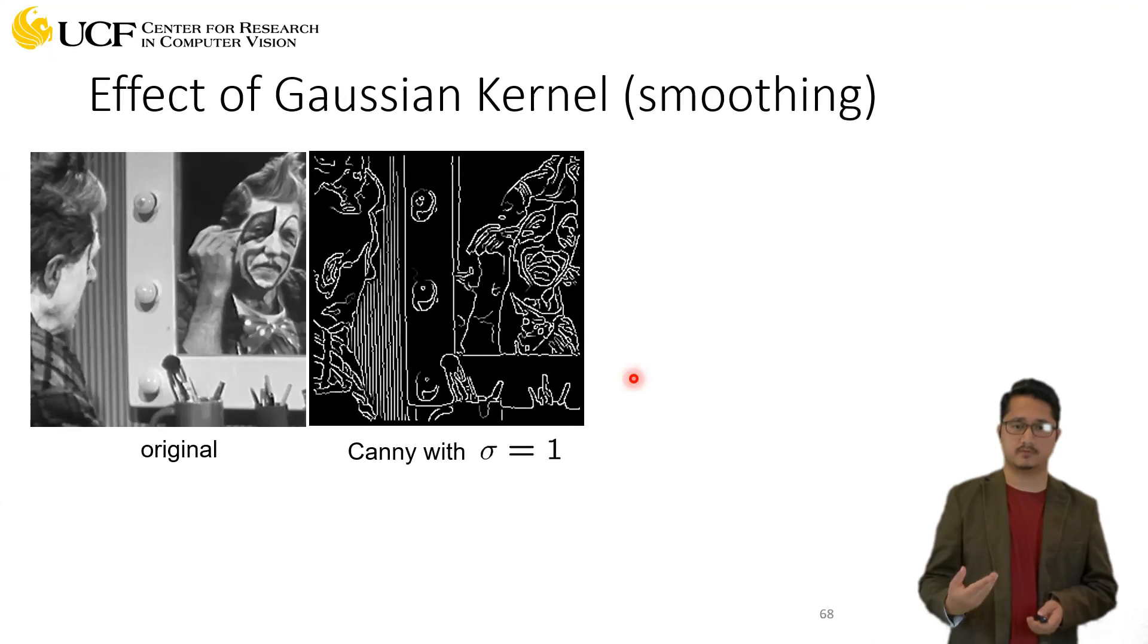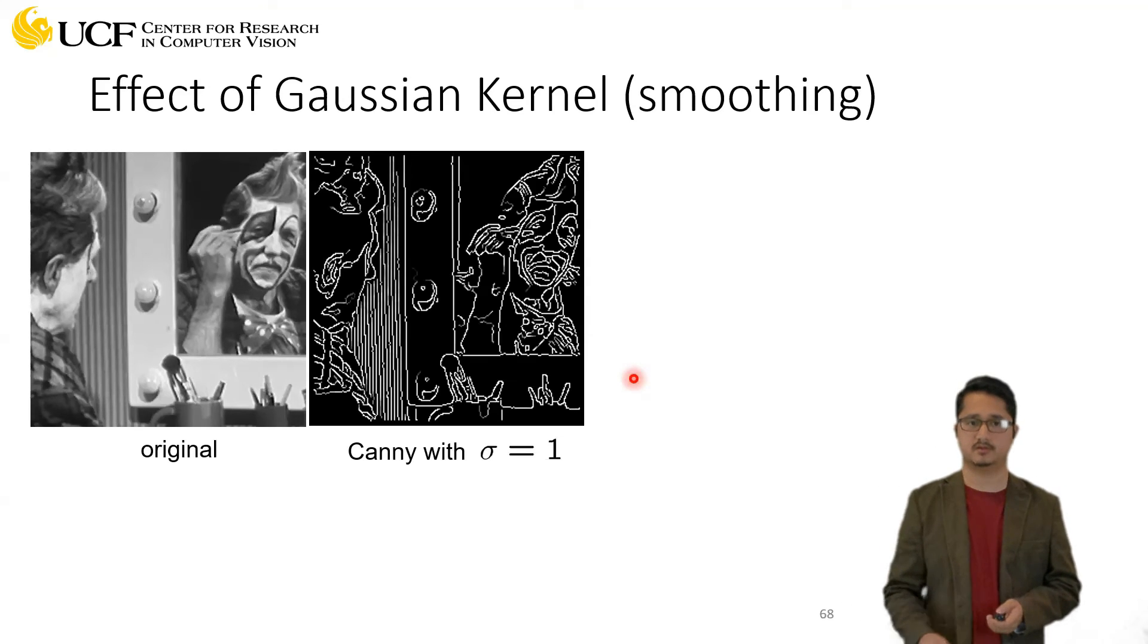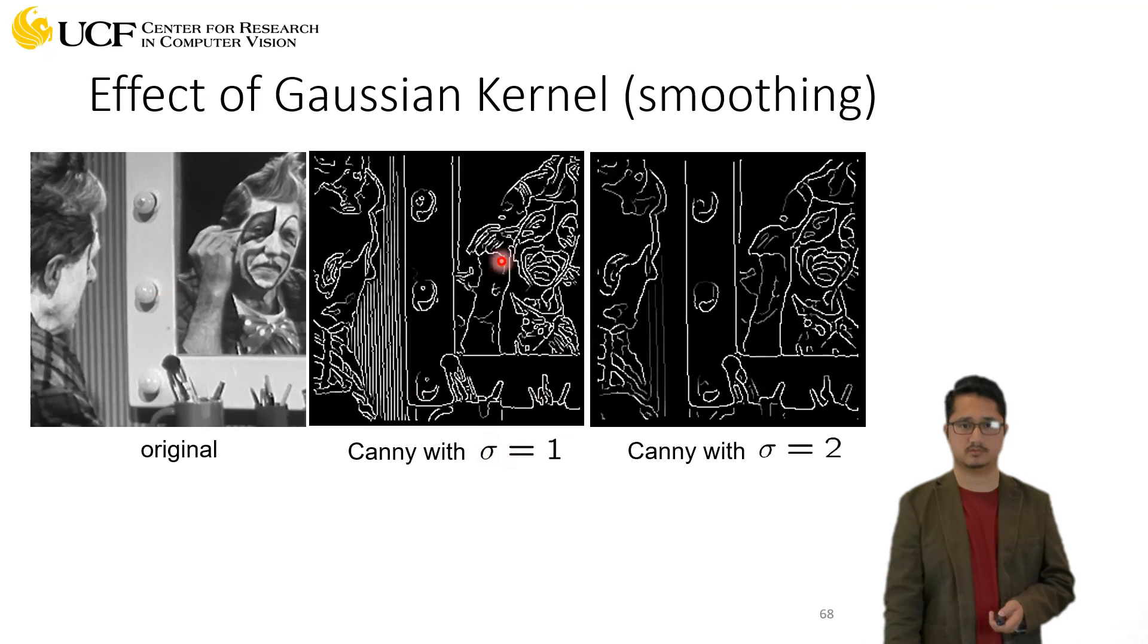As we saw the effect of Gaussian kernel on Marr-Hildreth, the same effect will be seen here. If we use a standard deviation of one, we can still detect fine-level edges. If we increase the standard deviation, which means we're looking at a bigger neighborhood, these fine-grain edges are disappearing and we're getting a coarse-level picture.